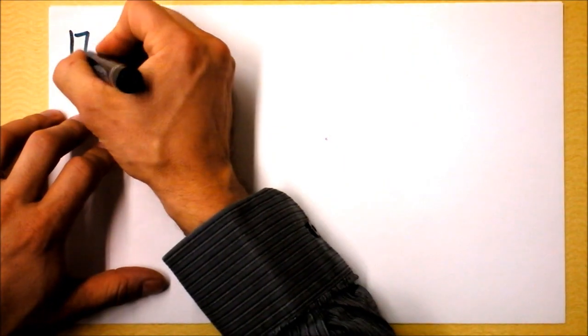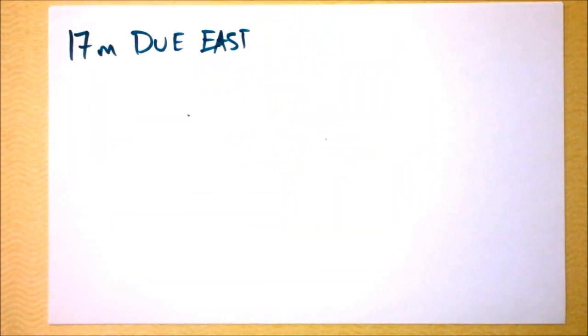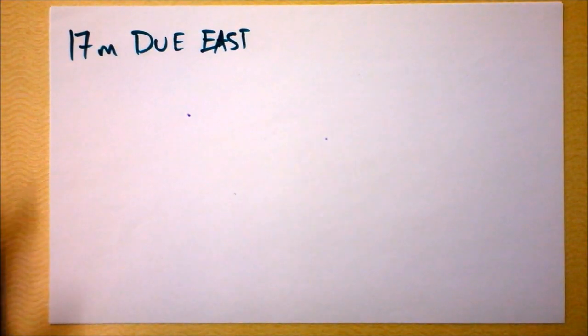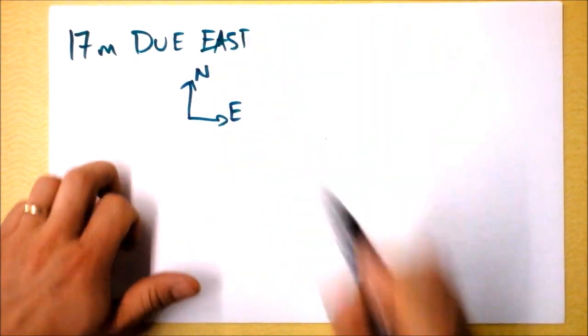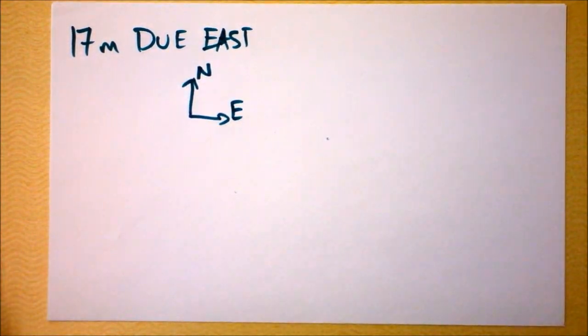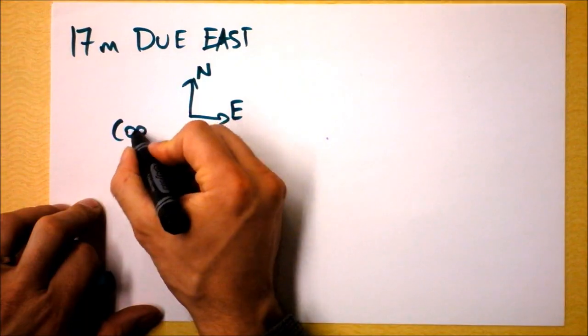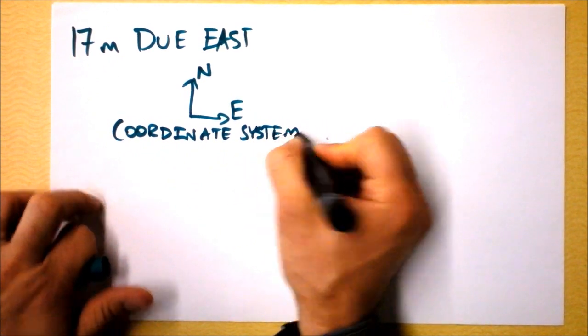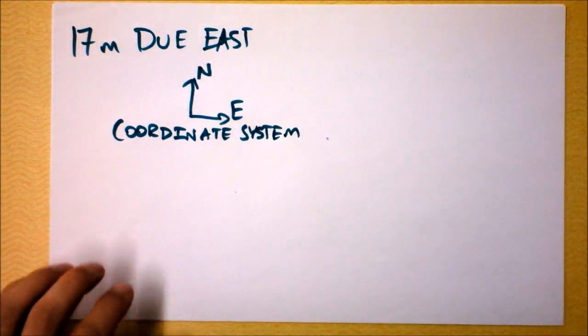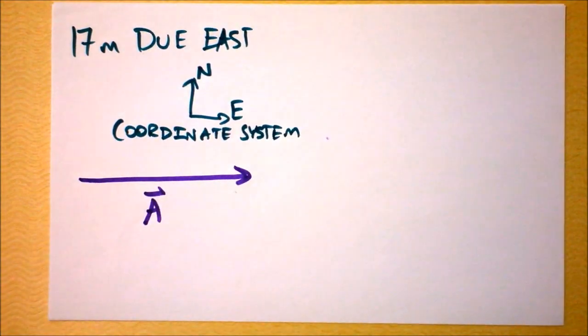So the first one is 17 meters due east. In order to draw a vector that's 17 meters due east, I need to determine which way I'm going to declare as east. And I probably want to determine another direction too. Like, maybe I will declare east to be that way and north to be that way. Like I'm looking at a map or a Google map on my phone or something, and it looks like that. And so this is my coordinate system, and the coordinate system tells me what's up in the problem. If I need a vector that's 17 meters due east, I would probably draw it an awful lot like that. And I will name that vector A. It's a vector pointing directly to the east, and there it is.